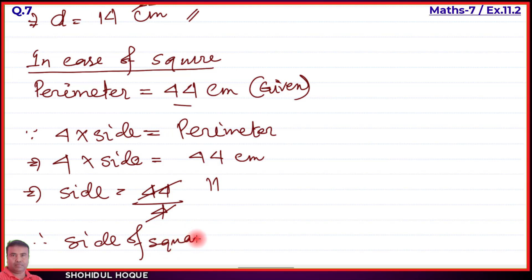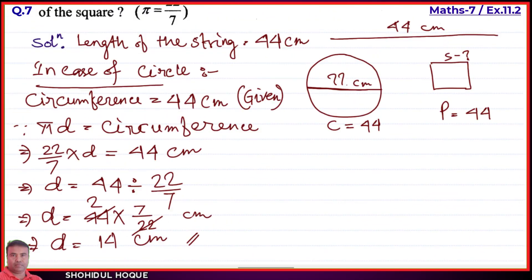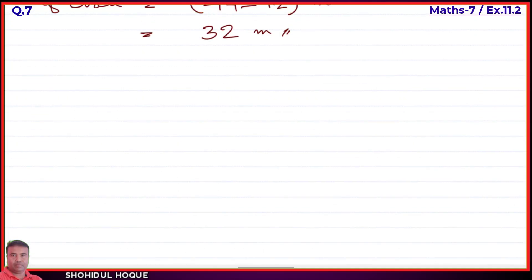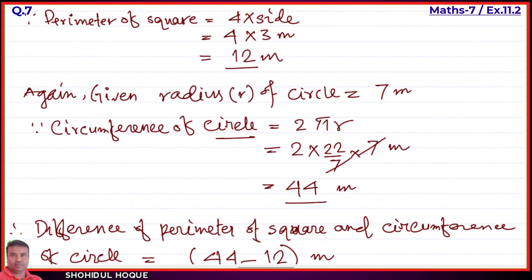Therefore, side of square equals 11 centimeters. That is the answer. We have solved question number 6 and question number 7.